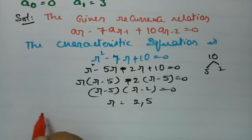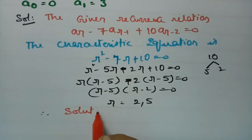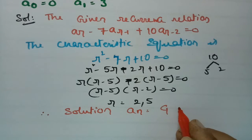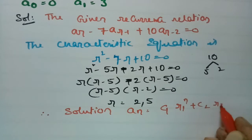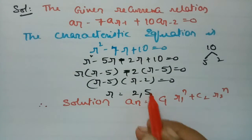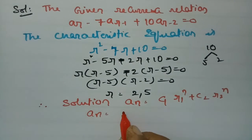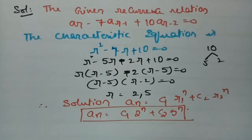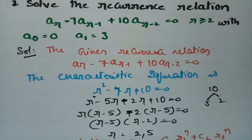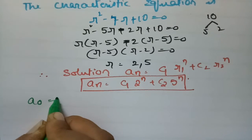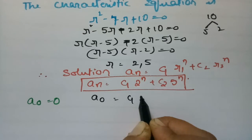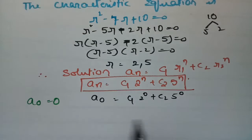The roots 2 and 5 are real and distinct. Therefore, the solution is An = C1·R1^n + C2·R2^n = C1·2^n + C2·5^n. Applying initial condition A0 = 0: putting n = 0 gives C1·2^0 + C2·5^0 = 0, so C1 + C2 = 0. This is equation 1. For A1 = 3: putting n = 1 gives 2C1 + 5C2 = 3. This is equation 2.